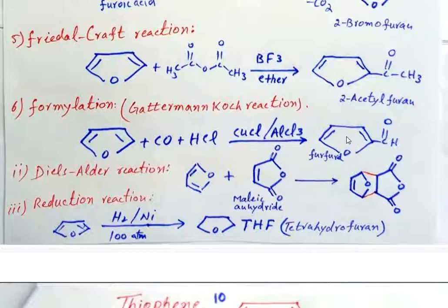The next reaction is Diels-Alder reaction. In Diels-Alder reaction, maleic anhydride is treated with furan, and as a result, we get an adduct.